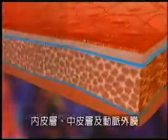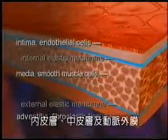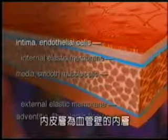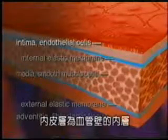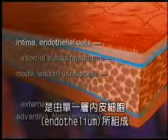Atherosclerosis develops from complex interactions between LDL, constituents of blood such as monocytes, and cells in the arterial wall. The normal artery wall is composed of three layers: the intima, the media, and the adventitia. The intima, or inner layer, is composed of a single layer of cells called the endothelium.